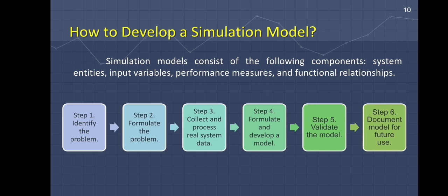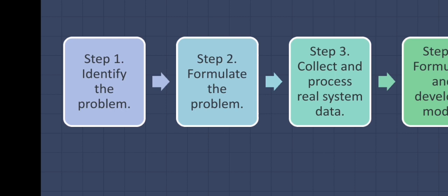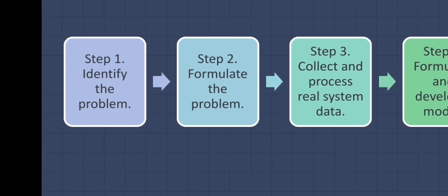Simulation modeling comprises the following steps. The first step is identifying the problem. In step one, enumerate problems with an existing system and produce requirements for a proposed system.